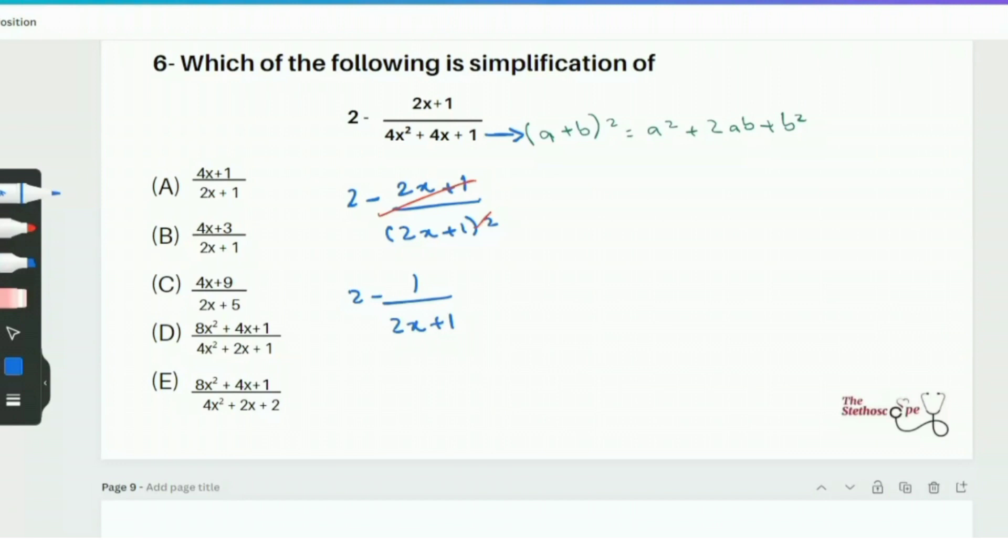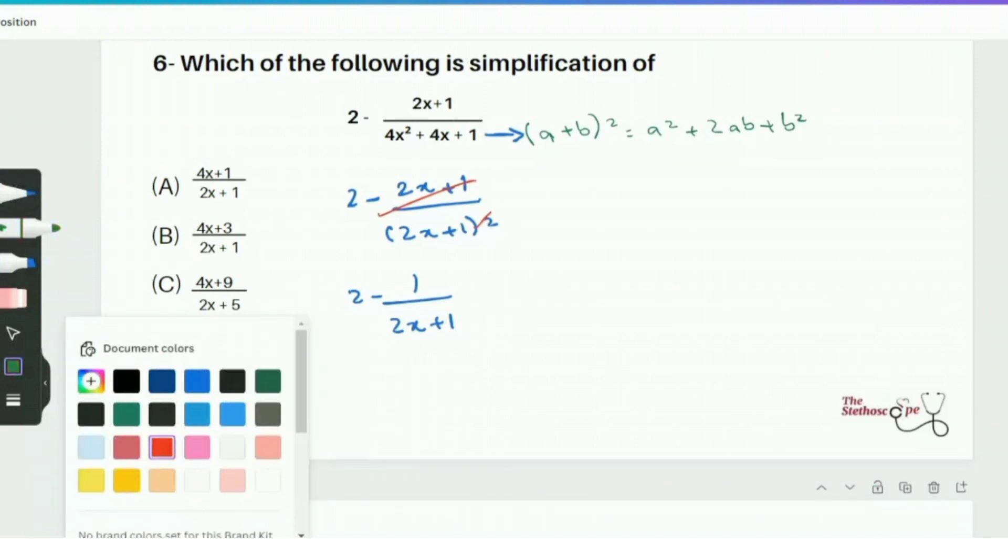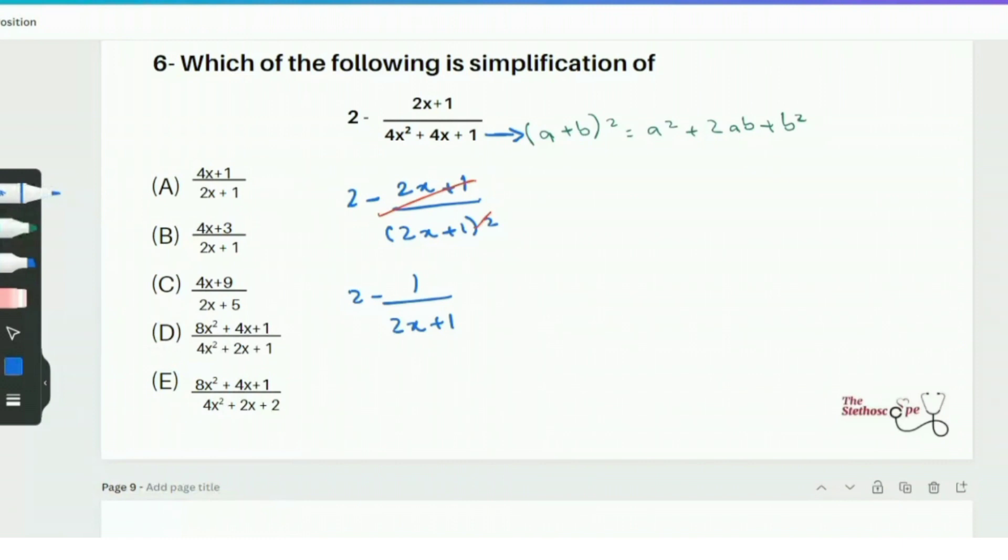Now have a look at the answer options. You can see none of them have 2 minus at the front. So therefore it would be wise to try to turn that 2 into a fraction which can then incorporate into the later fraction. We need to make sure that all have the same common denominator. Here we will multiply both the numerator and denominator of this fraction with 2x plus 1. So I can simply write it as 2 times 2x plus 1 over 2x plus 1 minus 1 over 2x plus 1. 2x plus 1 is a common denominator so I can write it as 4x plus 2 minus 1 over 2x plus 1. And this leads us to 4x plus 1 over 2x plus 1. So option A is the correct answer.